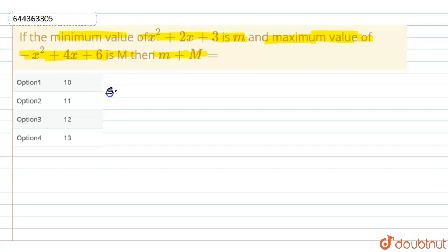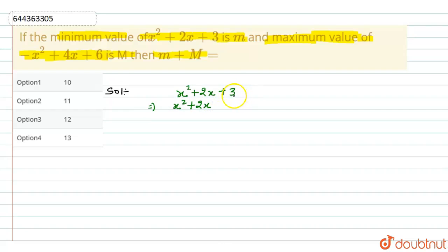In this question, first we have to find the minimum and maximum values. We have the equation x squared plus 2x plus 3. To make a perfect square, we rewrite x squared plus 2x plus 3 as x squared plus 2x plus 1 plus 2, since plus 1 plus 2 equals 3.